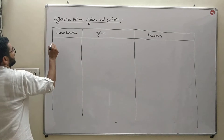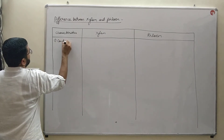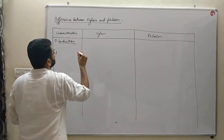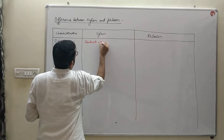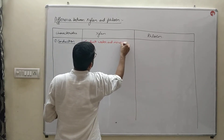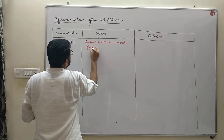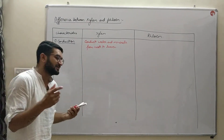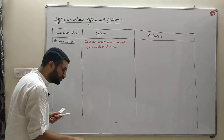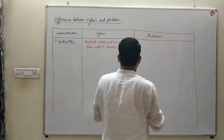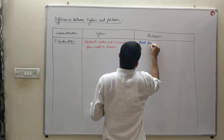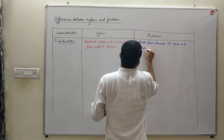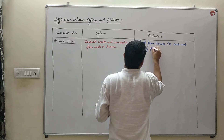The first characteristic on which we differentiate is conduction — which material is conducted by xylem or phloem? Xylem conducts water and minerals from roots to leaves. Whereas phloem conducts food from leaves to each and every part of the plant.